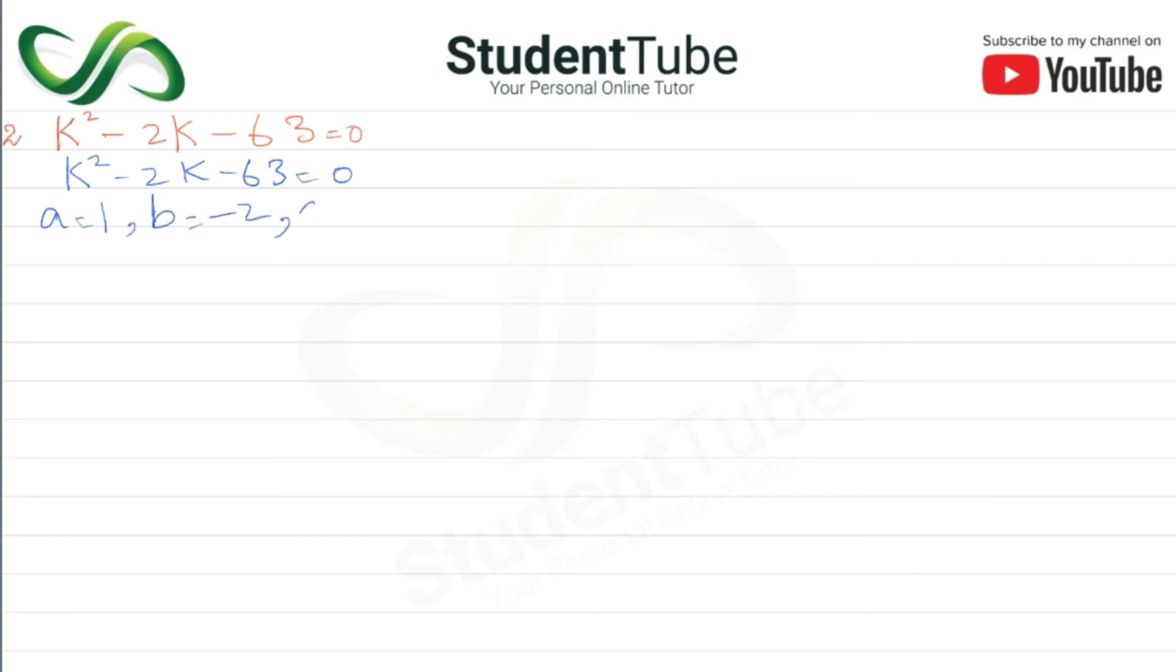Minus 2, and c minus 63. Now we put formula. In the formula k is equal to, the last question was x, we have equal to a, here is k. Minus b formula plus minus b squared minus 4ac upon, now here is 2a.